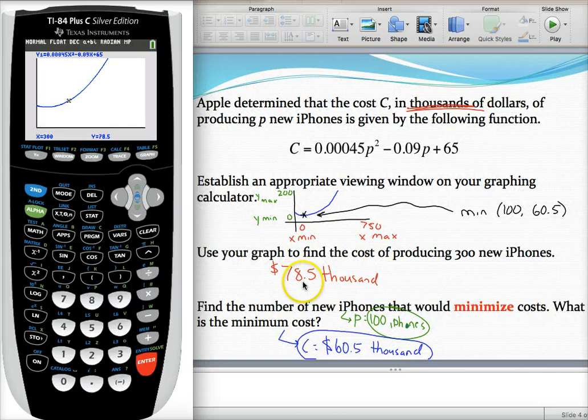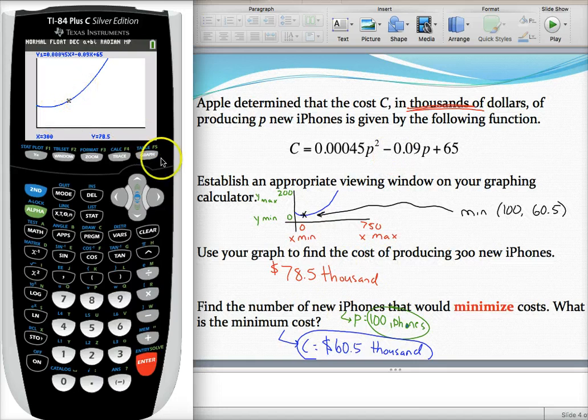it'll automatically jump to that price. So $78,500. Maybe we should have done this problem without the thousands, but whatever. There's my Y value for the given X.